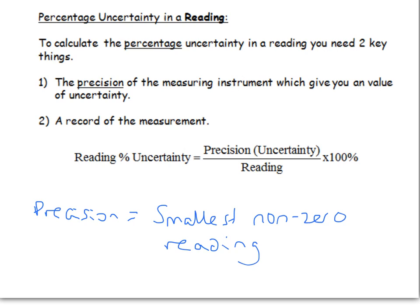You also need a measurement or a reading. So your voltmeter comes out at 2.1, that would be that record of the measurement. The way to calculate the reading percentage uncertainty is to take the precision, which is the uncertainty in this case, that goes on your top line. The measurement goes on your bottom line, and then multiply by 100%. That will give you the percentage uncertainty in a given reading.